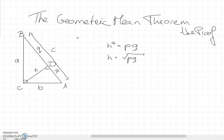This video is about the proof of the geometric mean theorem. Consider the following right angle triangle ABC with sides length a, b, c. The altitude belonging to AB has length h, and AD and BD have length p and q respectively.